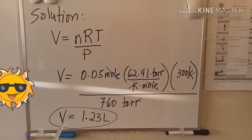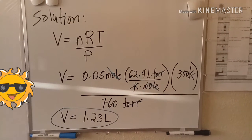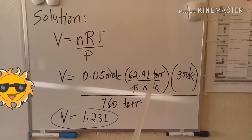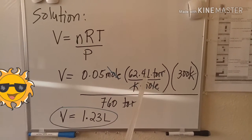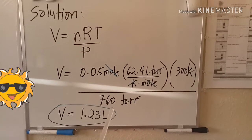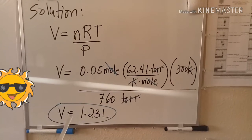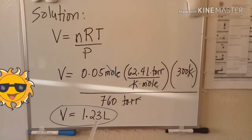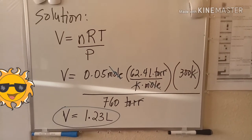So, the next thing you're going to do is multiply 0.05 to 62.4 liter and 300, and then divide by 760 torr. You will get 1.23 liters. So, that will be our answer, volume equals 1.23 liters.